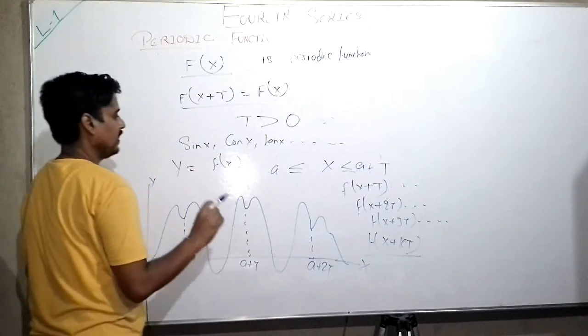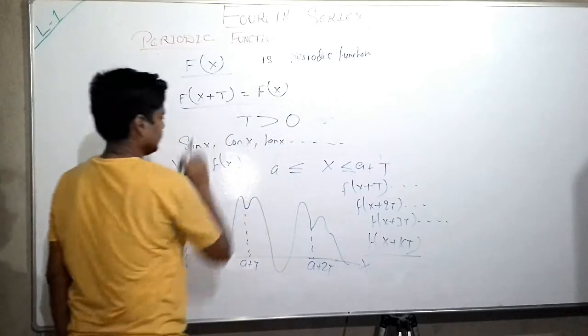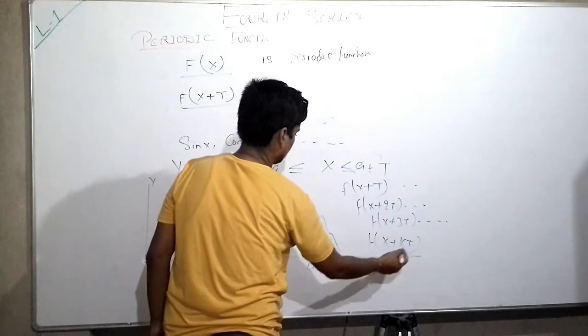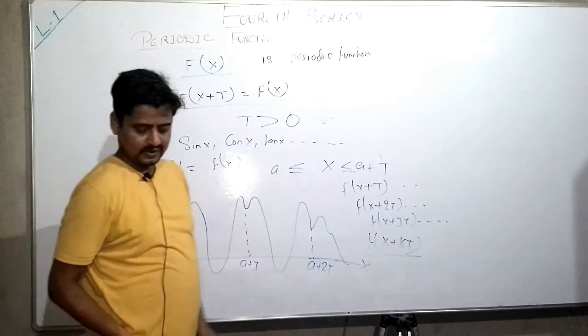So if T is the interval for this function, then 2T, 3T and so on can also be valid intervals or valid time periods for this function. So f(x + T), f(x + 2T), or x + 3T and so on. This is the definition of periodic function.